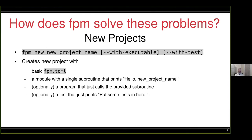To create a new project, the command is `fpm new` followed by the name of the project. Optionally, you can specify that you'd like it to have an executable and/or tests. It will create a basic skeleton project with a minimal `fpm.toml` file, a module with a single subroutine that prints 'hello, your new project name', a simple program that calls that subroutine, and optionally a test program that prints 'put some tests here'.